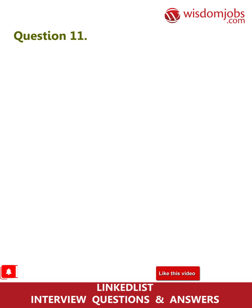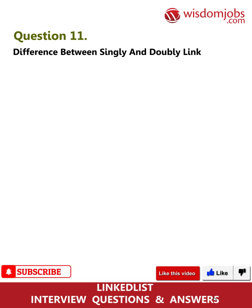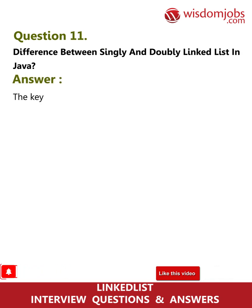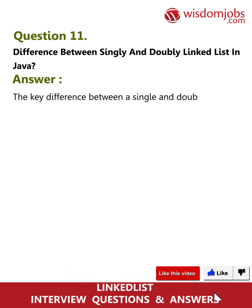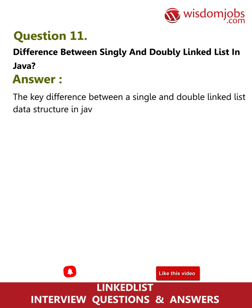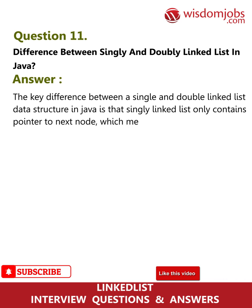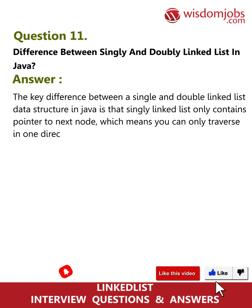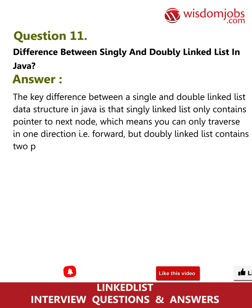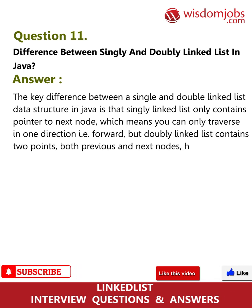Question 11: What is the difference between a singly and doubly linked list in Java? A singly linked list only contains a pointer to the next node, so you can only traverse in one direction — forward. A doubly linked list contains two pointers, both previous and next, so you can traverse in both forward and backward directions.